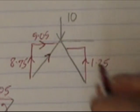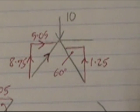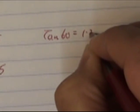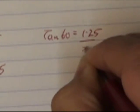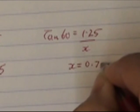This is 60 degrees. Therefore, tan 60 is opposite over adjacent. Tan 60 is 1.25 over x. x is equal to 0.72.